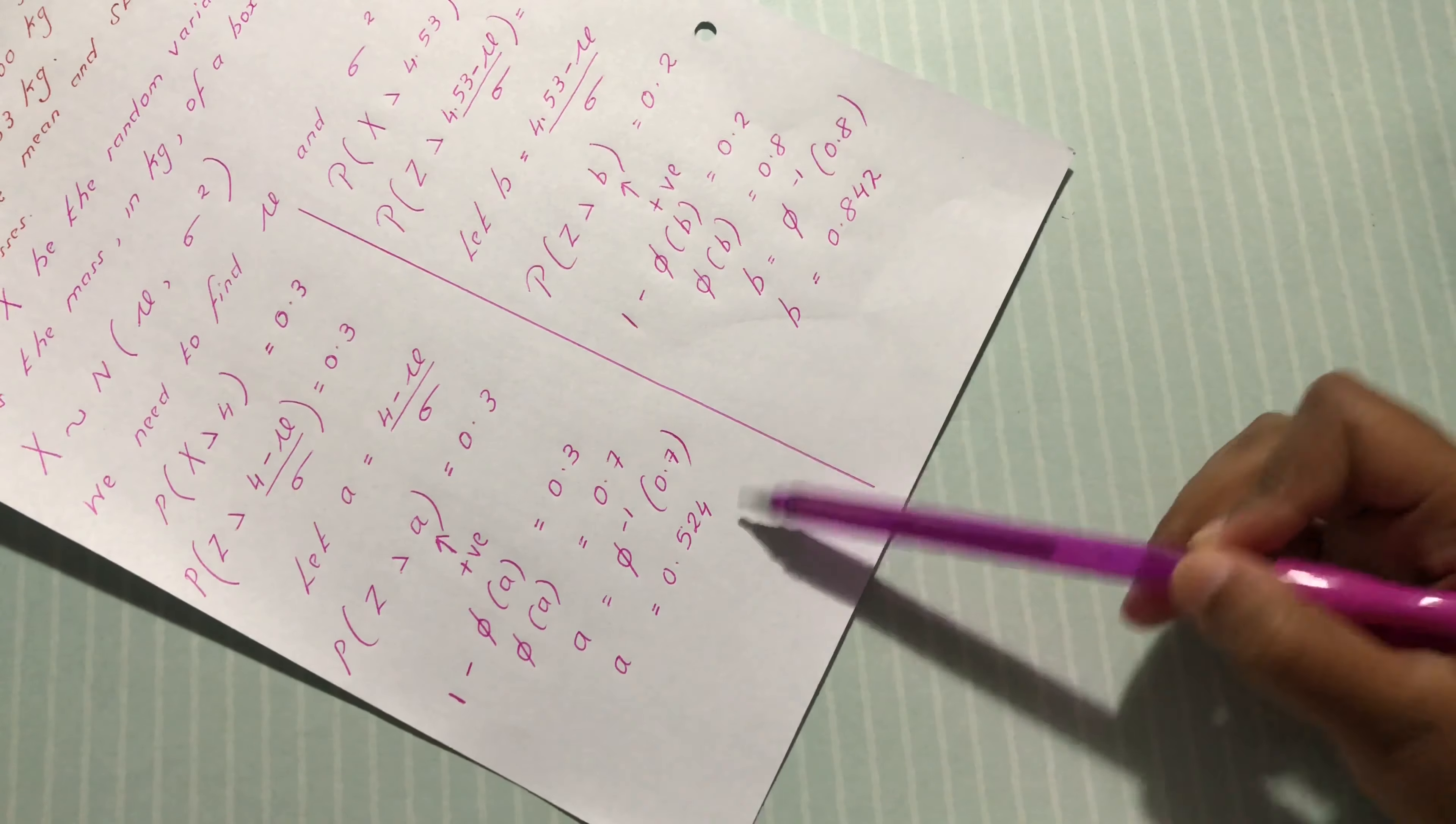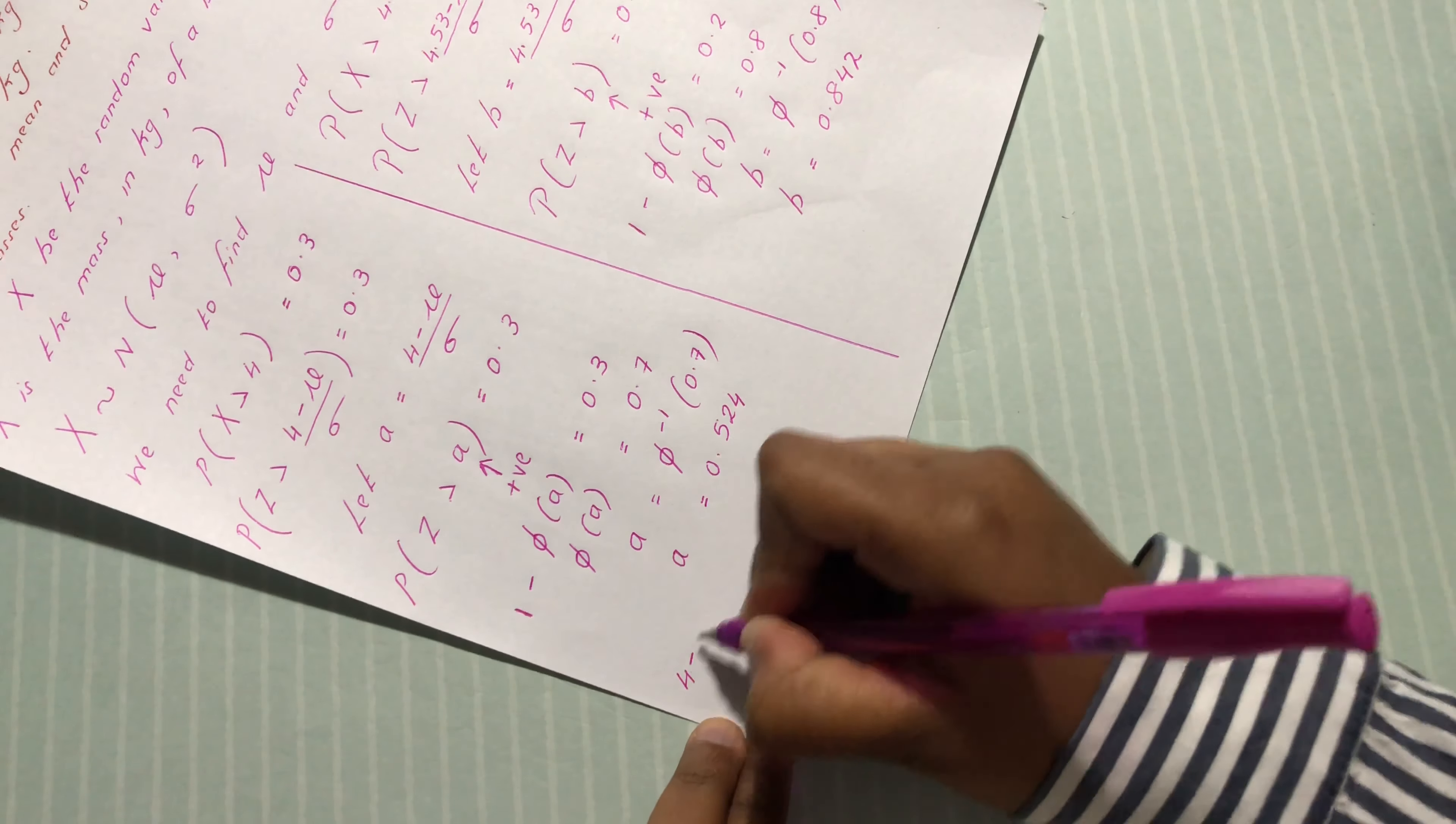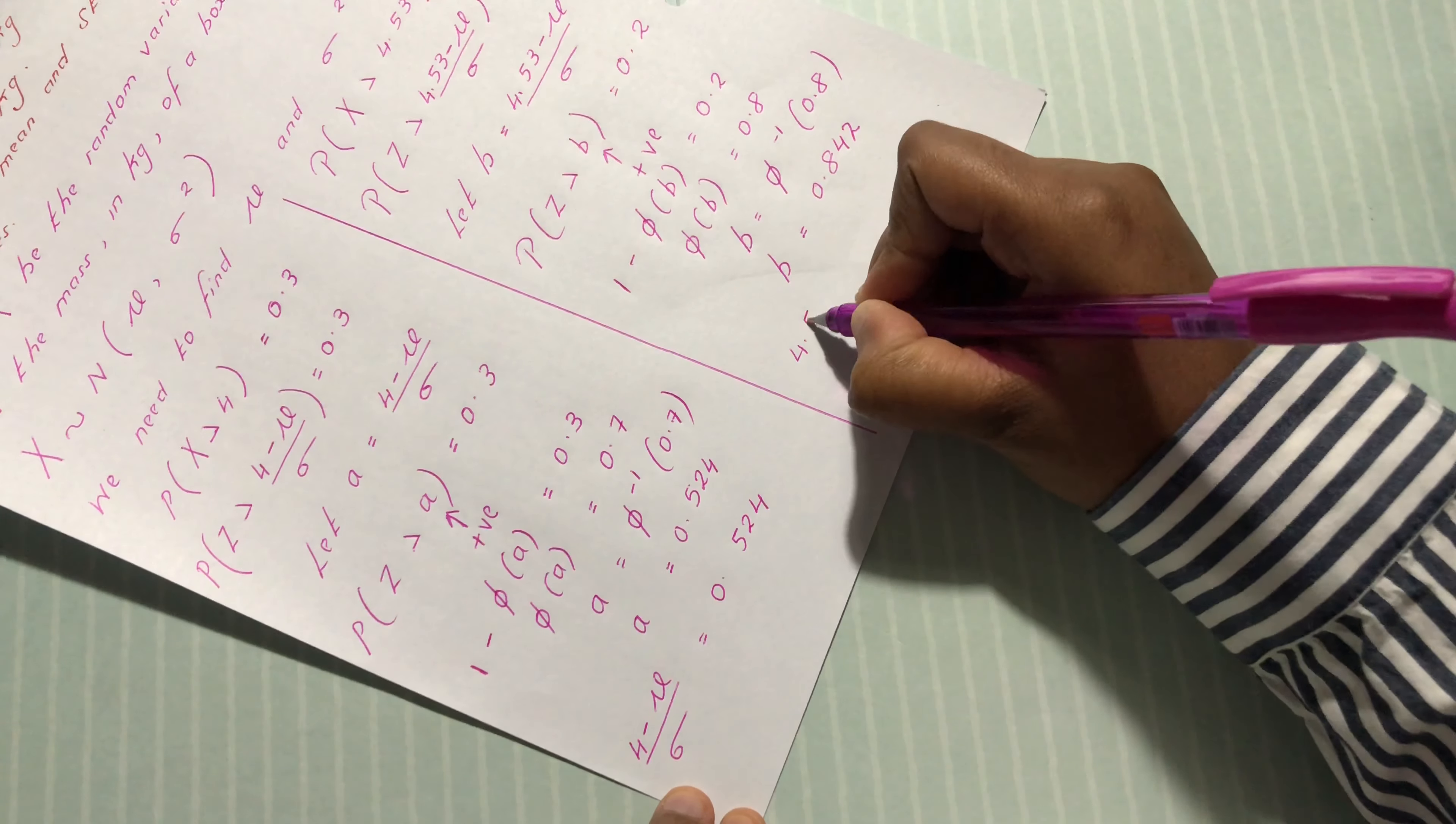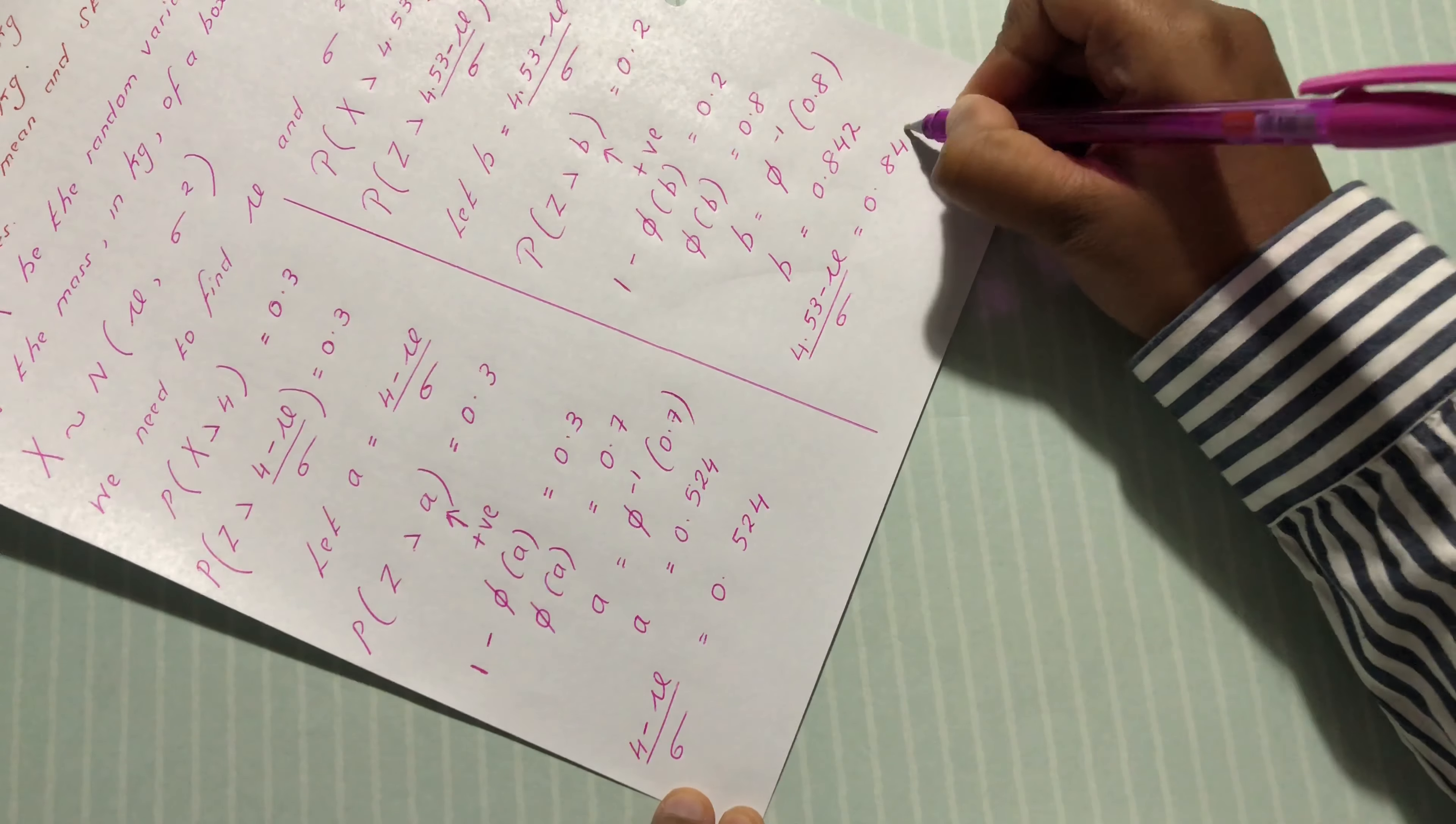We're going to replace in here and here respectively. We have 4 minus mu over sigma equals 0.524. Here, we have 4.53 minus mu divided by sigma equals 0.842.